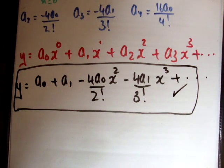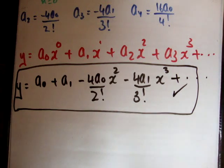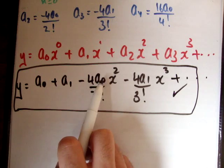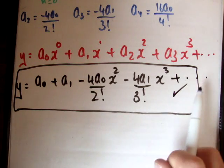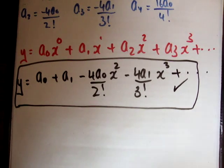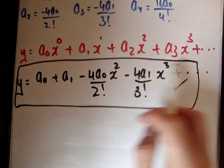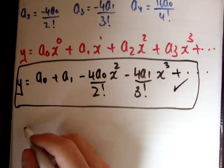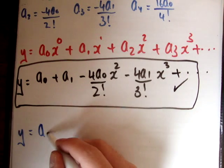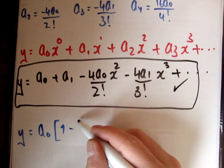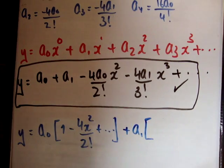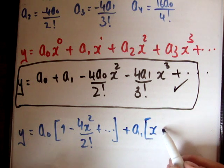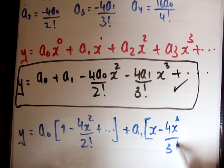You might notice there are actually two implicit power series involved: one with a_0 covering the even terms, and one with a_1 covering the odd terms. So this can be broken down as: y equals a_0 times (1 minus 4x squared over 2 factorial plus dot dot dot) plus a_1 times (x minus 4x cubed over 3 factorial plus dot dot dot).